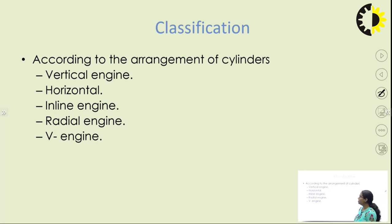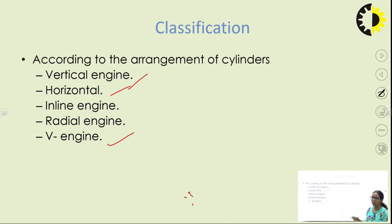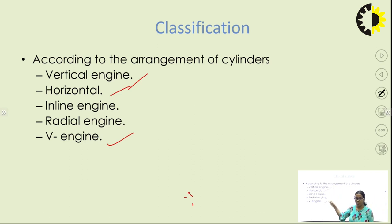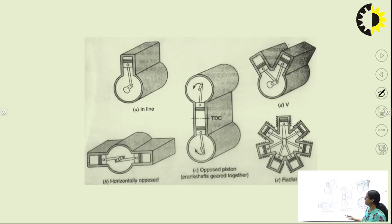According to the arrangement of cylinders, there are vertical engines, horizontal engines, inline engines, radial engines, and V engines. Basically, we change the orientation of different cylinders. When multi-cylinder engines are required, a particular orientation of each cylinder is needed, and there are standard configurations of arrangement. According to the method of cooling, air-cooled and water-cooled engines exist.